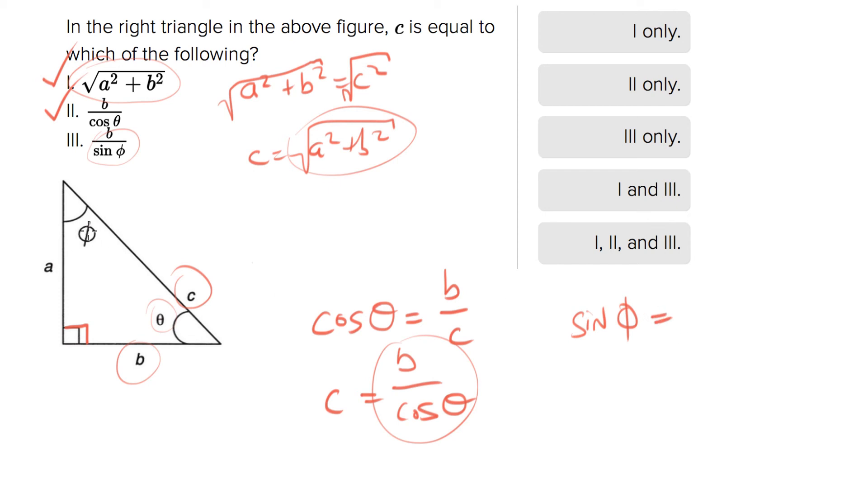So the definition of sine of an angle is the opposite side over the hypotenuse. So sine of phi is equal to b over c. And again, solve for c and we get c equals b over sine phi.